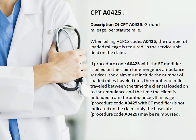The first CPT code is A0425, which is for ground mileage per statute mile. One mile is approximately 1.6 kilometers. When billing CPT code A0425, the number of loaded miles is required in the service unit field on the claim — otherwise the claim will be denied by the insurance. CPT code A0425 uses an AT modifier, which indicates emergency transport.